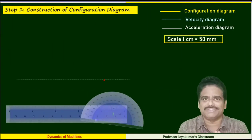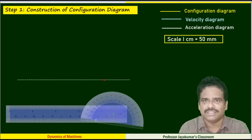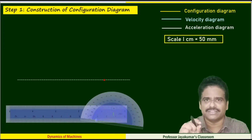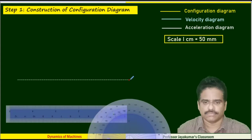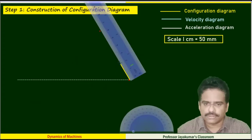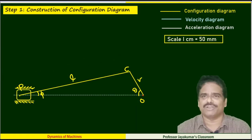Let us apply step one: construction of the configuration diagram using the usual procedure. I have chosen a scale of one centimeter equal to 50 mm, which depends on the R and L values given. Draw the line of stroke and choose any arbitrary point. Using the crank angle and crank radius, get the crank pin end. By using the length of the connecting rod, we get the piston end. Joining them gives the configuration diagram.